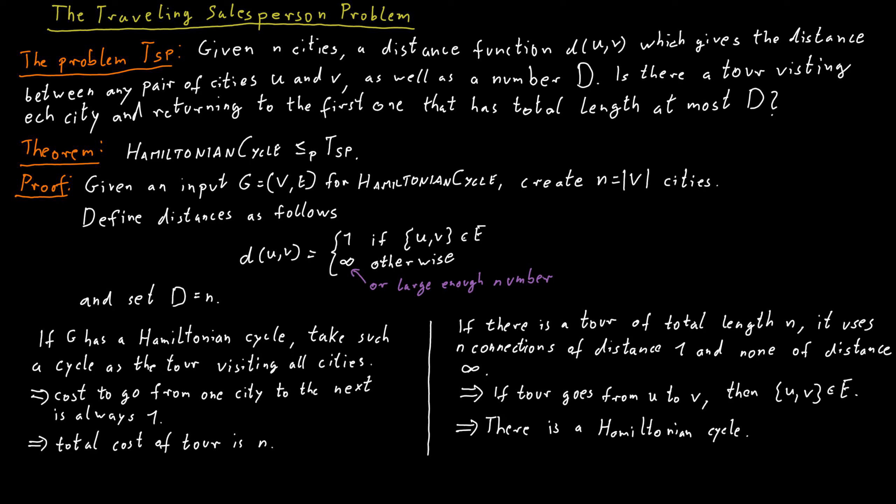We can slightly improve this reduction, in fact. So this TSP instance is a little bit strange, because some cities have distance 1, and then other cities have distance infinity, or at least a very large distance.